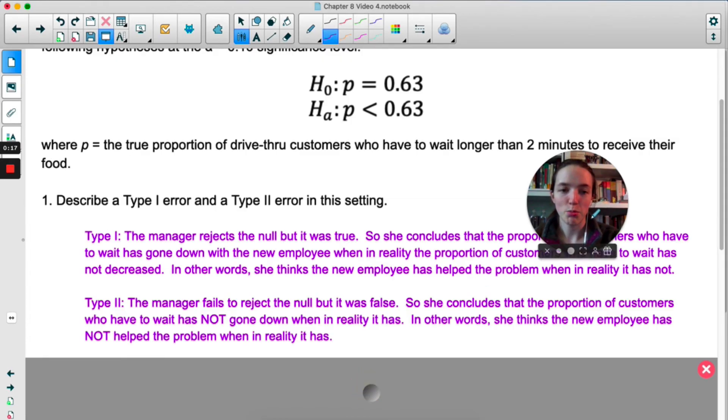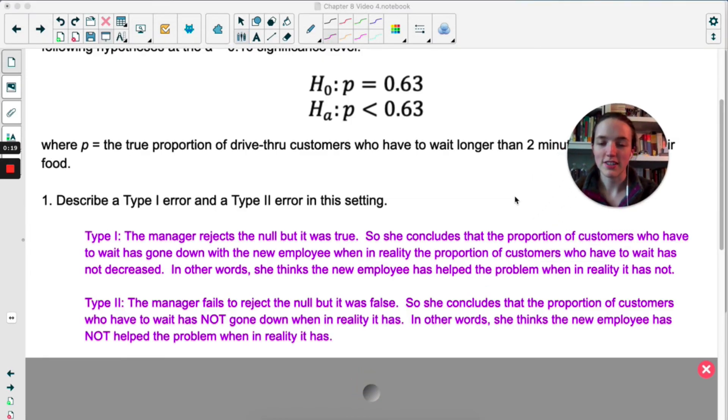So in this setting, Type 1 would be the manager rejects the null but it was actually true. So she's concluding that the proportion of customers who have to wait has gone down with the new employee when in reality it hasn't decreased. So in other words she thinks the new employee has helped the problem when in reality it has not helped the problem. Type 2 she fails to reject the null but it was actually false. So she concludes that the proportion of customers who have to wait has not gone down when in reality it has. So in other words she thinks the new employee is not helping the problem when in reality it really is fixing the problem.